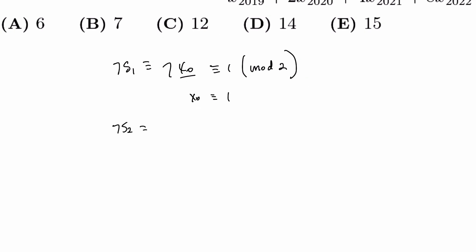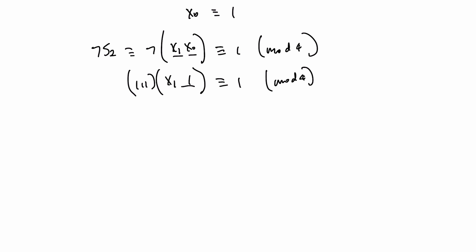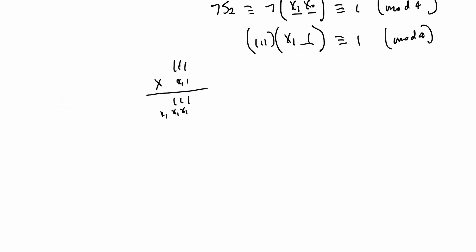Let's try 7S2, which is 7 times x1x0. This number is 1 mod 4. So we can see that 7 can be written in binary as 111 times this x1. And we know x0 is 1, is 1 mod 4. We can expand this using normal long division but in binary. 111 times x11. And then this is going to be x1x1x1. And we want this digit to be 0. So the only choice we have is for x1 to be 1. So we know x1 is 1.